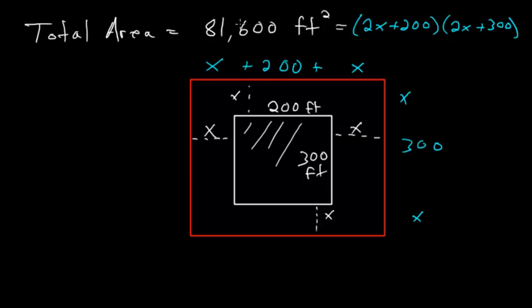So if we can solve this equation here, then we can figure out what the width of this parking strip would be. So to solve this, we'll just need to multiply out these two binomials using the FOIL method. And we'll rewrite 81,600, and that's equal to, so we'll start with the first, 2x times 2x, which would be 4x squared.